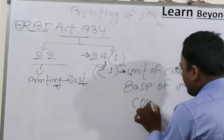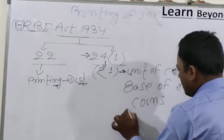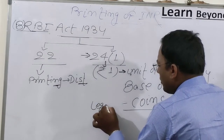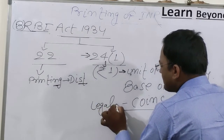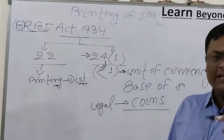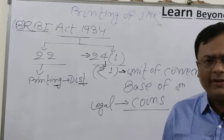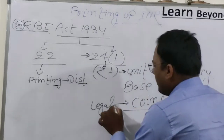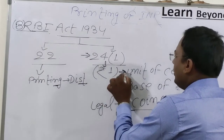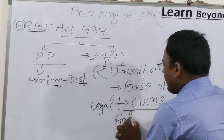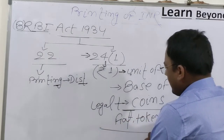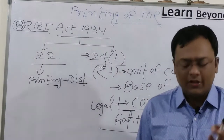The one rupee note can also be considered as a coin. Although it is a note, it is a legal tender — meaning money issued properly by the Government of India, not fake currency. It can also be called: base of currency, unit of currency, fiat money, or token money. These are all names for the one rupee note.